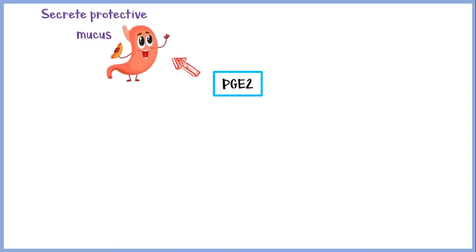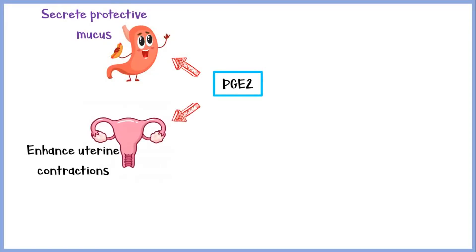In addition, prostaglandins have other functions as well. These include inducing the secretion of protective mucus in the gastric mucosa, enhancing uterine contractions, and reducing gastric acid secretion.